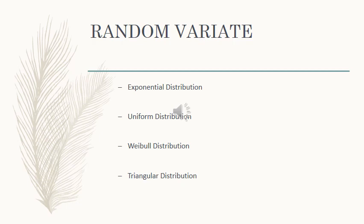Here we are going to see how random variates can be developed based on distributions. Several distributions have been listed: exponential distribution, uniform distribution, Weibull distribution, and triangular distribution. Each of these distributions has its own CDF — cumulative distribution function. Based on the CDF, we apply the inverse transform technique to obtain the random variate.